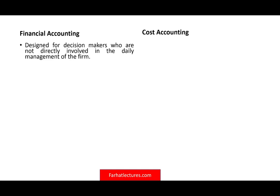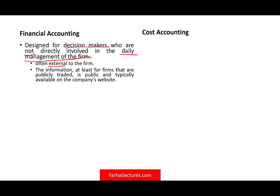So what is the difference between a financial accounting and a cost accounting system? Let's start with financial accounting. Who are the users? The users are the decision makers who are not directly involved in the daily management of the firm — they are outsiders, specifically investors and creditors, people who have a vested financial interest in the company. The information can be found on a publicly traded company's website, usually in the quarterly report as well as the annual report.